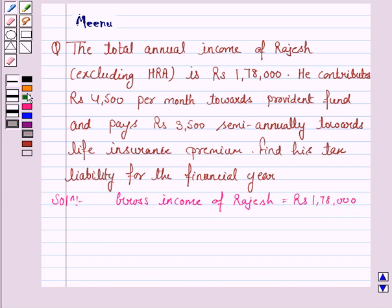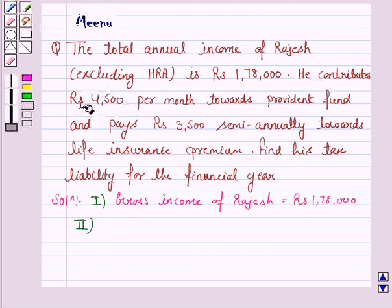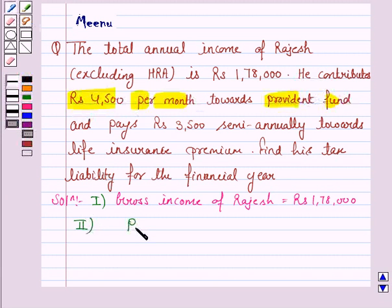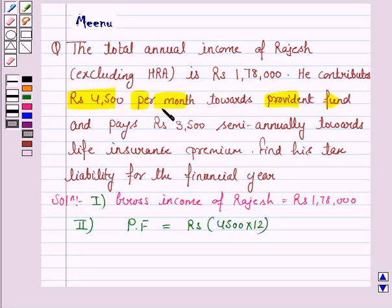The second step is to find the savings made by Rajesh. He contributes Rs. 4,500 per month towards Provident Fund. So, PF is Rs. 4,500 into 12, because he pays Rs. 4,500 per month for his Provident Fund, and that comes out to be Rs. 54,000.